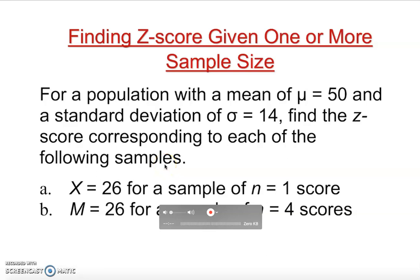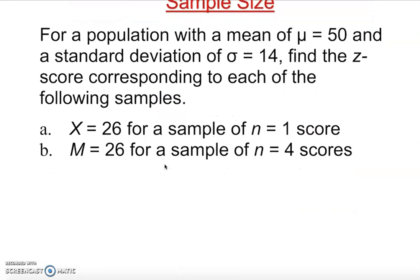Clearly, down here, the first one is x, a random value, data value, one score for a sample of one score. When we have m, this is like a sample mean. In other words, we are assuming this sample mean is for four scores. So we are going to use a different technique than the first one.